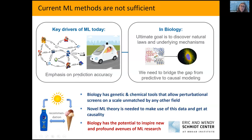But what is surprising, at least still to me, is that the key drivers of foundational developments in machine learning and AI are still not the biomedical sciences. The key drivers are things like recommender systems, online advertising, self-driving cars, robotics, et cetera. In all these applications, one has come very far by just directly trying to optimize prediction accuracy.